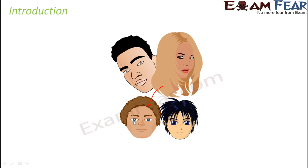Similarly, if you look at the color of the eyes, you will see that this boy has got blue eyes. But if you see, none of the parents have blue eyes — both the mom and the dad have brown eyes. So blue eyes is a new character which is seen in the kid. It was not present in the immediate parents but it is a new character which has appeared.